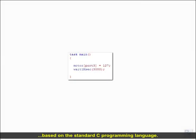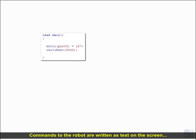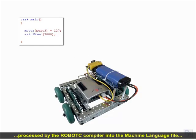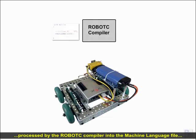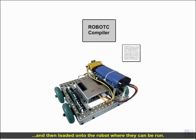Robot C is a text-based programming language based on the standard C programming language. Commands to the robot are written as text on the screen, processed by the Robot C compiler into the machine language file, and then loaded onto the robot where they can be run.